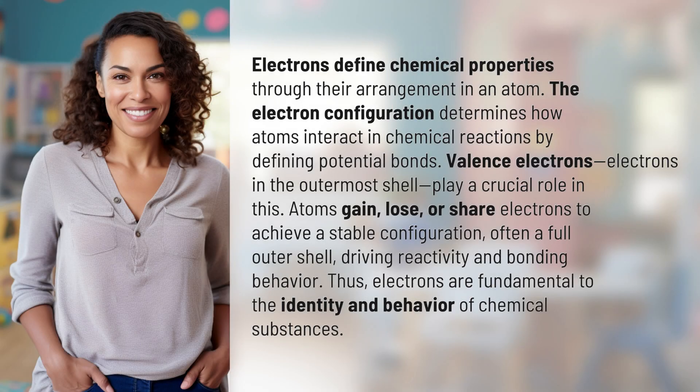Electrons define chemical properties through their arrangement in an atom. The electron configuration determines how atoms interact in chemical reactions by defining potential bonds.